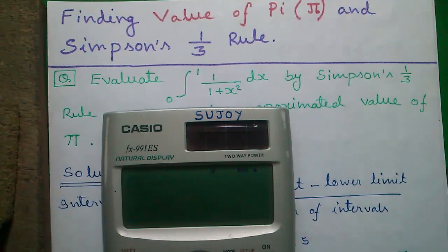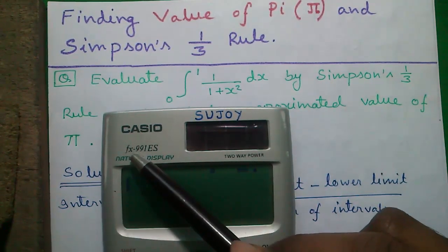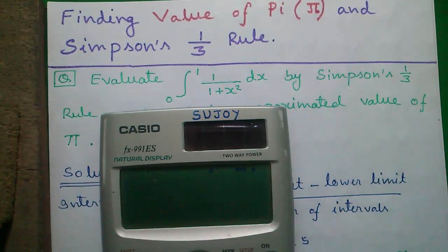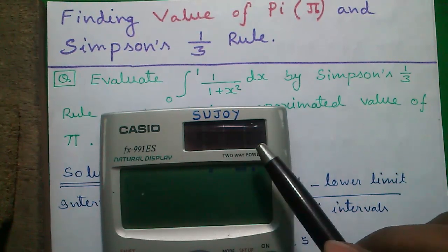Number 1, how to do numerical integration using Simpson's one-third rule. Number 2, how to find out the value of pi. Number 3, how to do numerical integration directly on this Casio FX-991ES calculator. And Number 4, how to find out value of pi directly on this calculator.